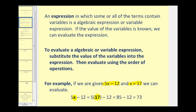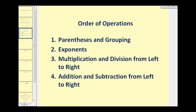Let's go ahead and review the order of operations before we do a few more examples. Remember there are 4 steps to the order of operations. Number 1, we'll evaluate inside the parentheses or grouping. Number 2, we'll evaluate the exponents. Number 3, we'll multiply and divide from left to right as it occurs. And number 4, we'll add and subtract from left to right.